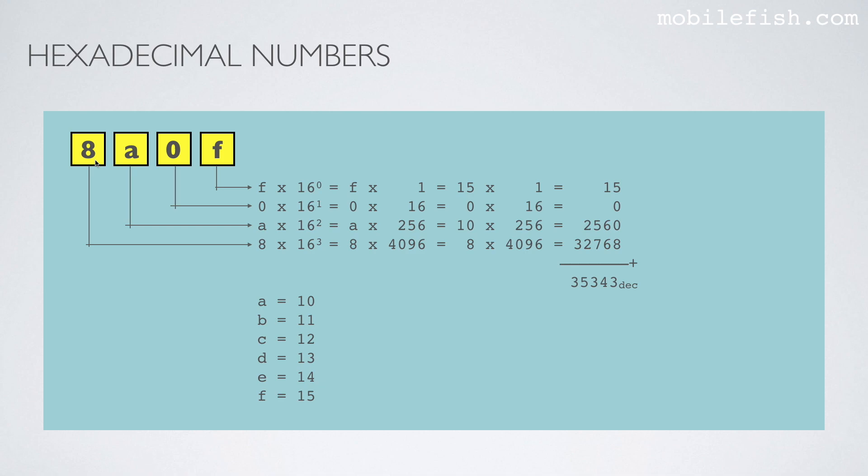So again, we have here a hexadecimal value: 8A0F. If you want to convert this hexadecimal value into a decimal value, you will do exactly the same what you have done earlier. You write down these values over here: F, 0, A, 8. Because this is a base 16 system, you have to write 16 over here. And these are the positions. And the only thing you have to remember is that A has a corresponding value 10, B has a corresponding value 11, etc. So the hexadecimal value 8A0F is the same as 35,343 decimal.